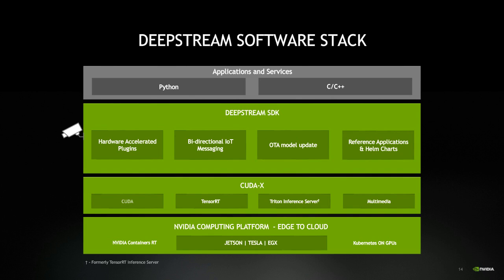The DeepStream SDK is a streaming analytics toolkit for AI-based video and image understanding. With DeepStream, you can build efficient edge applications for real-time AI. At the application level, DeepStream apps can be built using native C/C++ or Python using DeepStream Python bindings. A lot of the AI deep learning community uses Python, and to enable more developers, we're bringing full capability to Python — you can now completely build your applications in Python.